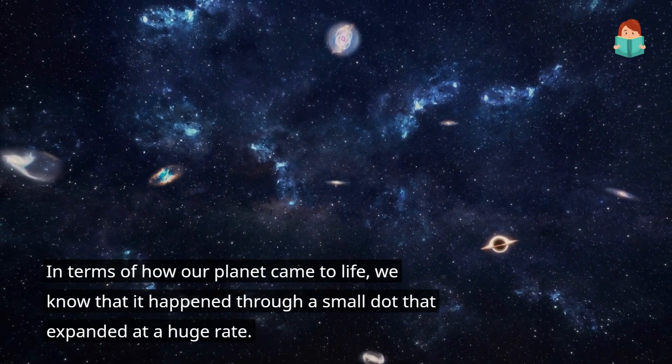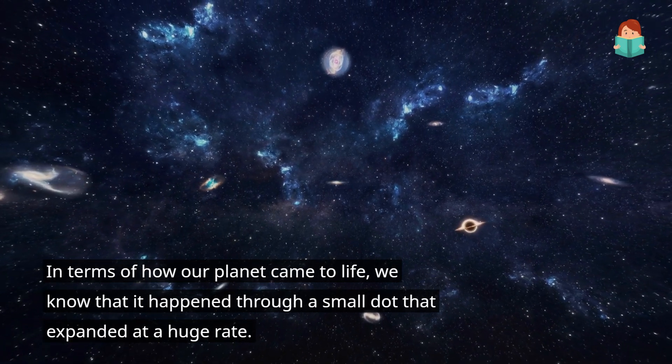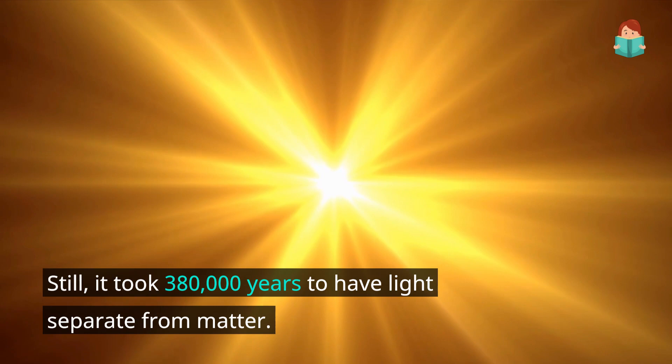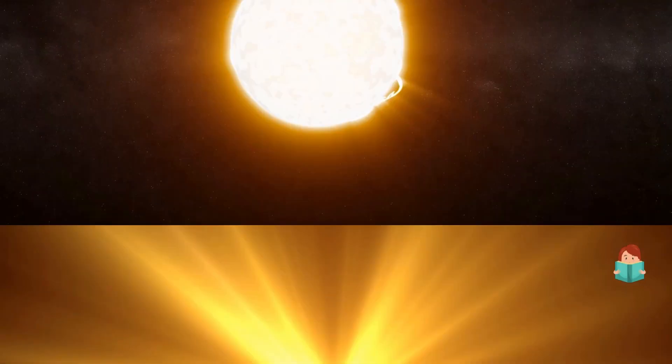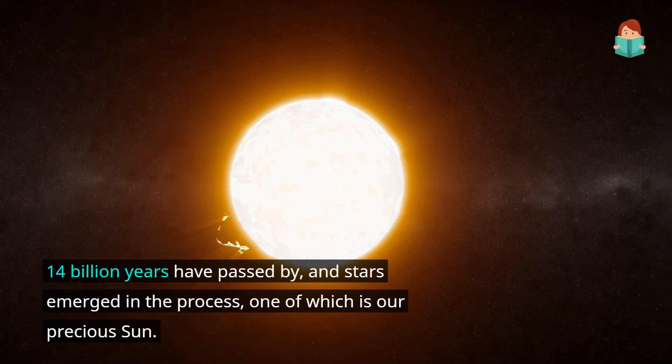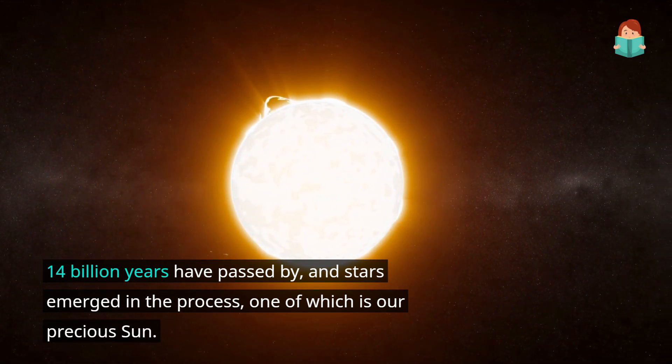In terms of how our planet came to life, we know that it happened through a small dot that expanded at a huge rate. Still, it took 380,000 years to have light separate from matter. 14 billion years have passed by, and stars emerged in the process, one of which is our precious sun.